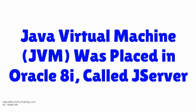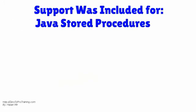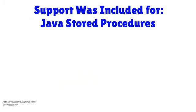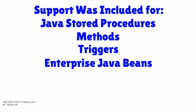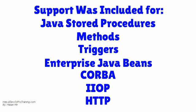A Java Virtual Machine, or JVM, was placed in Oracle 8i — it used to be called JServer. The Java Virtual Machine included support for Java Stored Procedures, Methods, Triggers, Enterprise Java Beans, CORBA, IIOP, and HTTP.